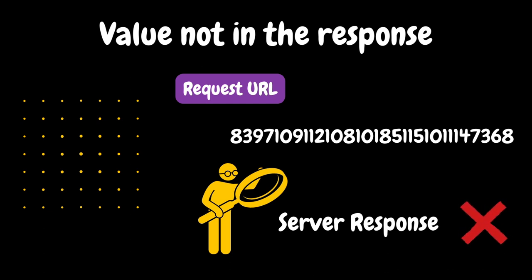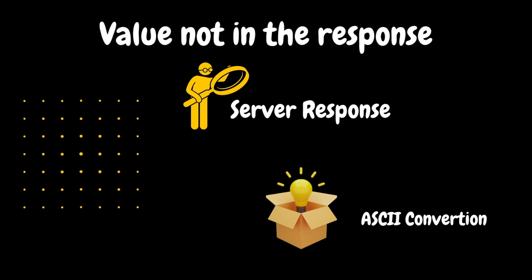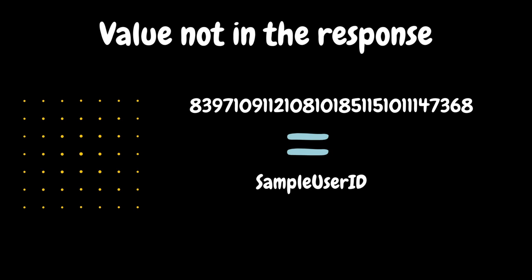The script runs successfully in a single-user test, but when running with different users, the moment we test the script and look at a particular request, the value may be dynamic and related to the user. The developer stores the user ID in the application, and the ASCII format converts the value of this request. The actual value is the sample user ID converted to ASCII.